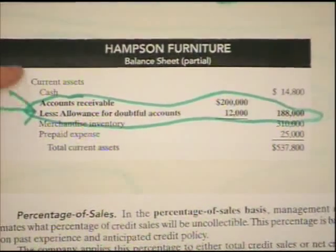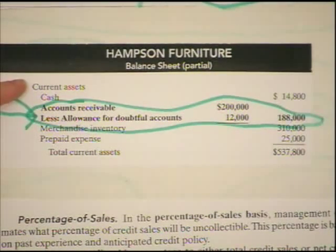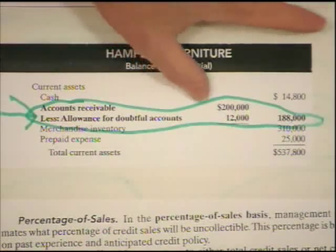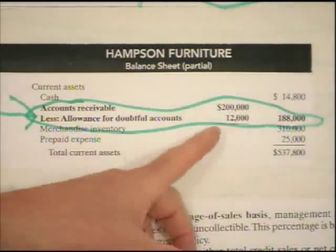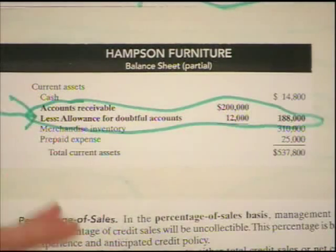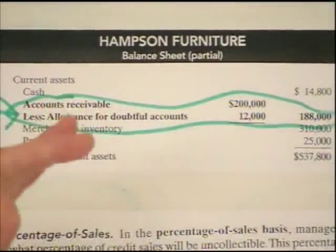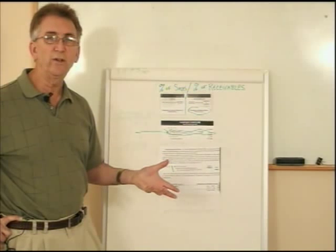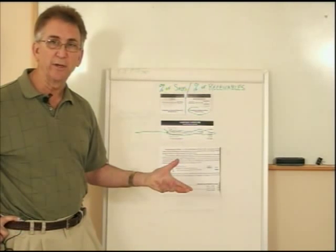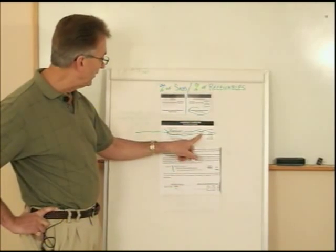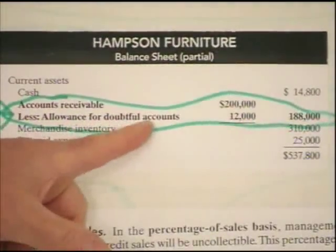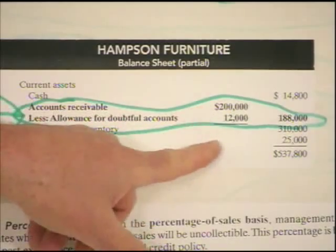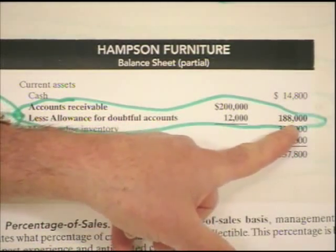On the balance sheet, receivables would appear under current assets. Our total receivables come to $200,000. If we go to our subsidiary ledger and look at every person's name one at a time, we can see they owe us $200,000 — but we know we're really not going to collect that full amount. So we establish an allowance account, which shows through an accounting estimate what we believe we're not going to collect. In this case, that's $12,000, shown as the allowance for doubtful accounts, and we subtract it from the $200,000.